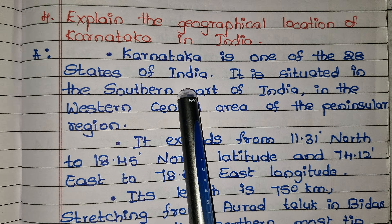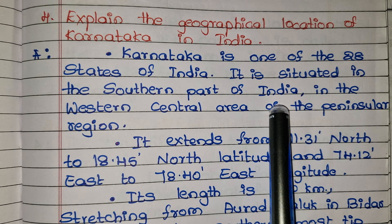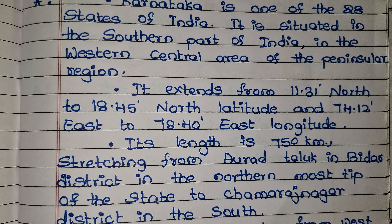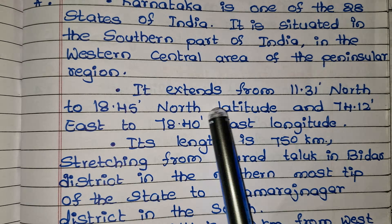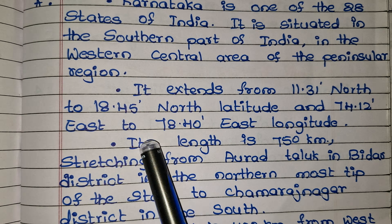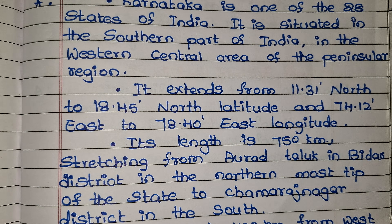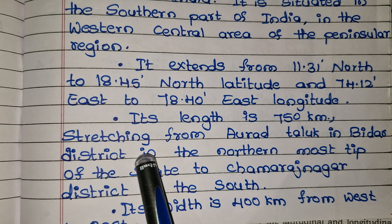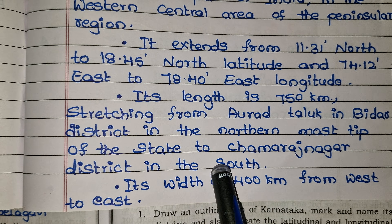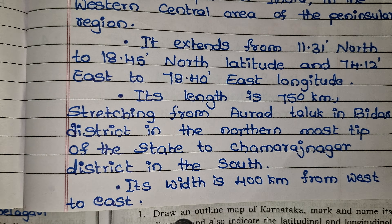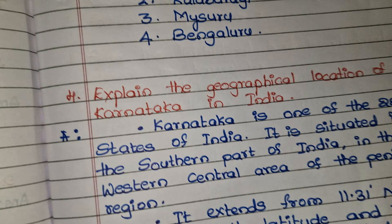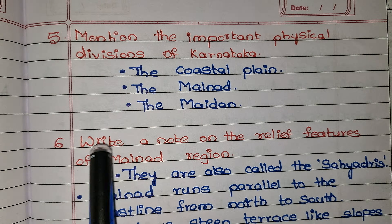Explain the geographical location of Karnataka in India. Karnataka is one of the 28 states of India. It is situated in the southern part of India, in the western-central area of the peninsular region. It extends from 11°31' North to 18°45' North latitude and 74°12' East to 78°40' East longitude. Its length is 750 kilometers, stretching from Bidar district in the north to Chamarajanagar district in the south. Its width is 400 kilometers from west to east.